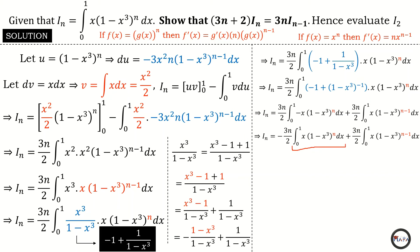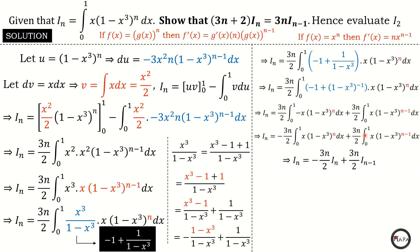Going back to the original integral: the integral from zero to one of x times (1 minus x cubed) raised to the power n is I of n, and the integral from zero to one of x times (1 minus x cubed) raised to the power n minus one is I of n minus one, since I subtract one from the power. Replacing those integrals with their identities: I of n on the left equals negative three n over two times I of n plus three n over two times I of n minus one.